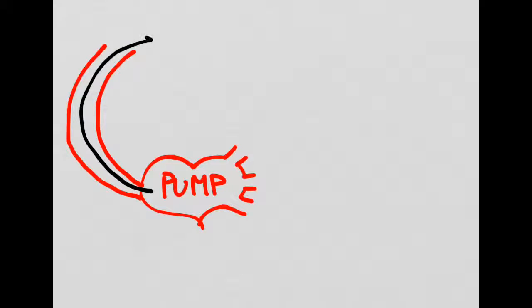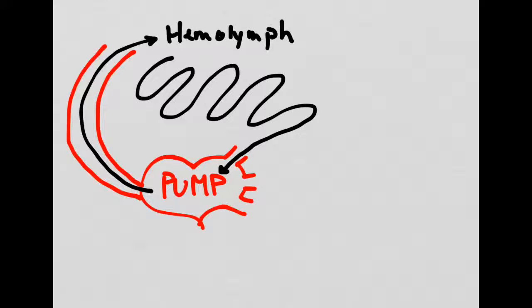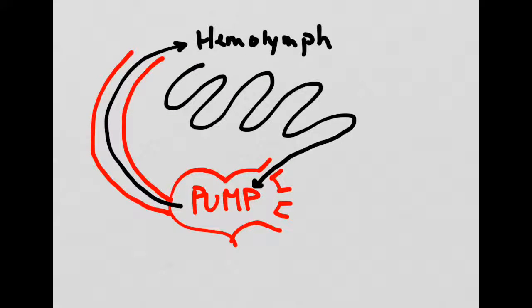This right here is what we would call an open circulatory system. It still does have a pump, but it relies almost exclusively on diffusion. The blood is then released into an area called hemolymph. After essentially floating around inside the organism, it will ultimately return back to the pump. Organisms that have an open circulatory system do not have blood pressure, and because this system relies almost exclusively on diffusion, these organisms tend to be a lot smaller.